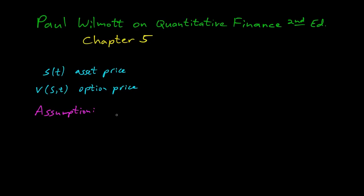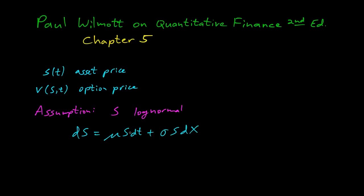Assume that S is log normal — we saw that before. That means that dS is the drift plus the volatility. The drift is proportional to the size of the asset, and the volatility is also proportional to the size, and this gives the log normal random walk.